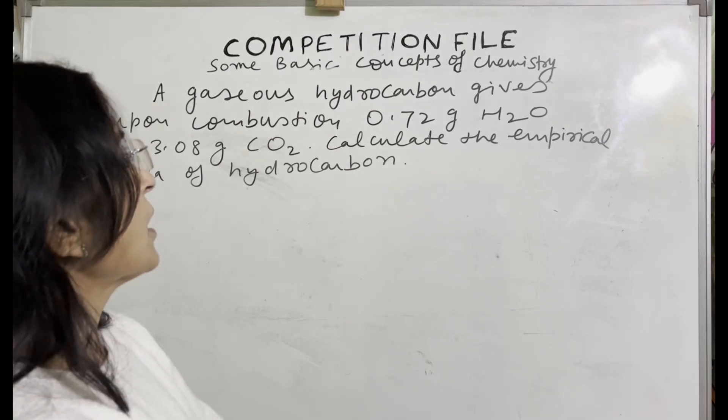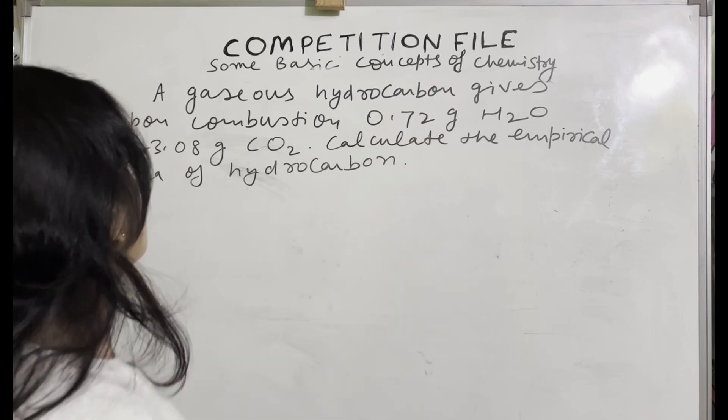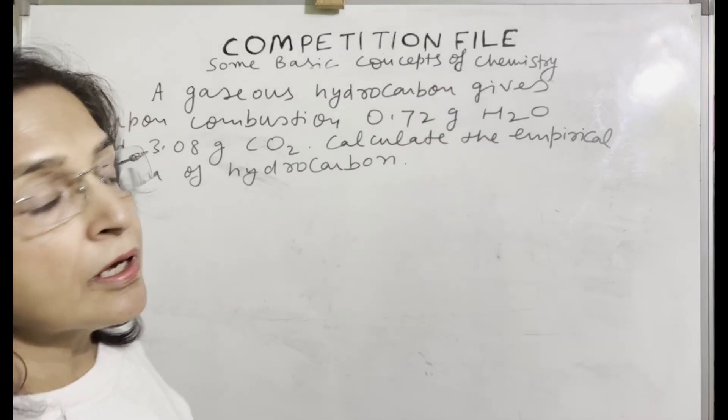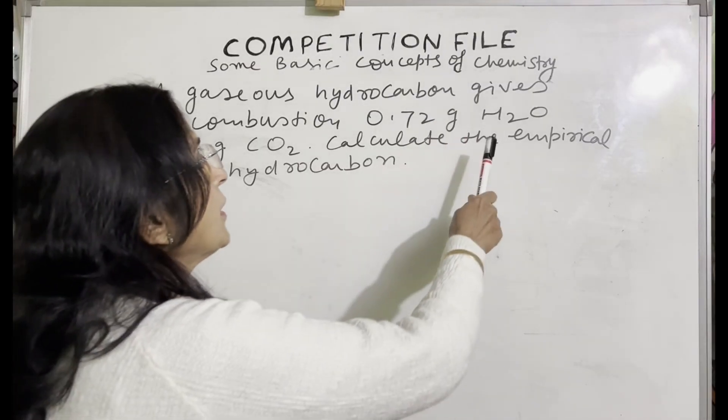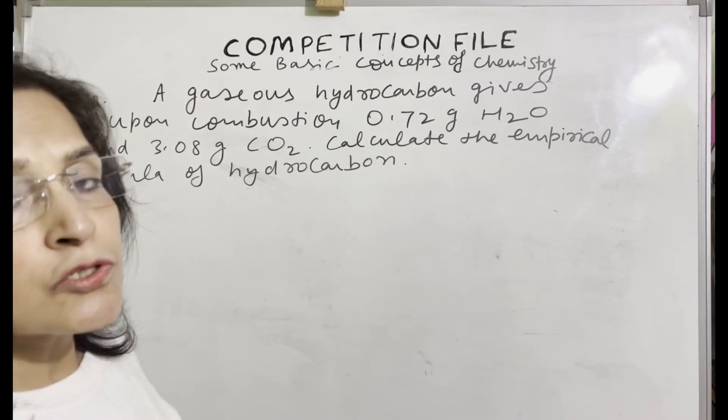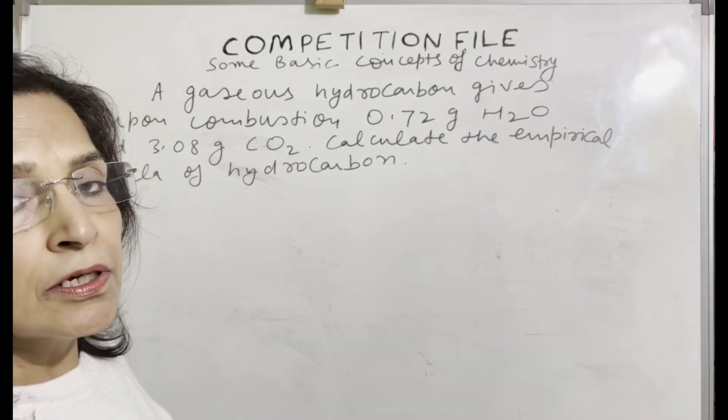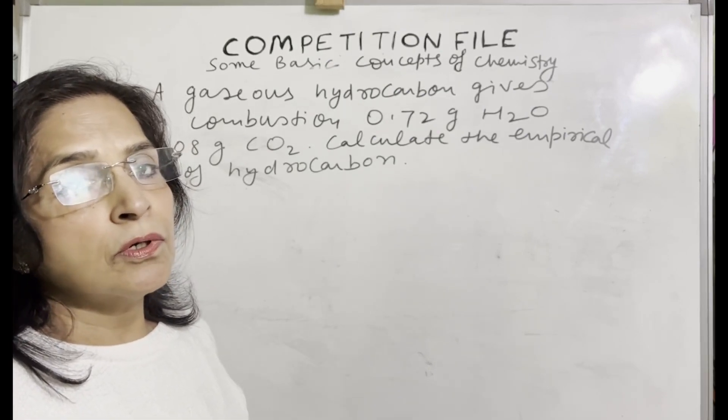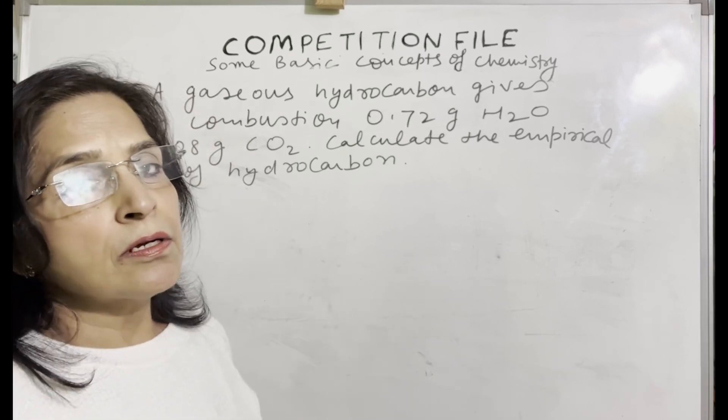Next problem is: a gaseous hydrocarbon gives upon combustion 0.72 grams water and 3.08 grams carbon dioxide. Calculate the empirical formula of hydrocarbon. From the amount of water given, you will find the mass of hydrogen in the organic compound. And from the mass of carbon dioxide given, you will find the mass of carbon in the organic compound. Sum of both will give the mass of the organic compound.